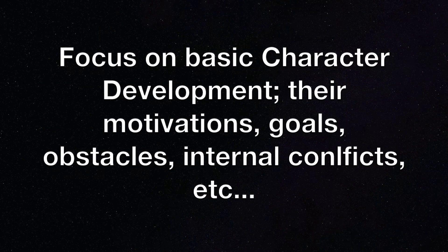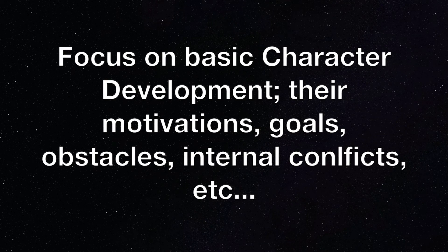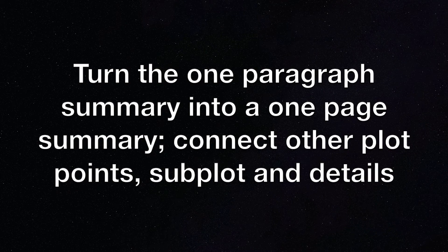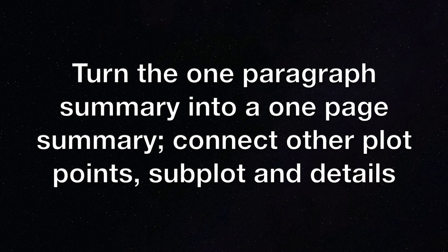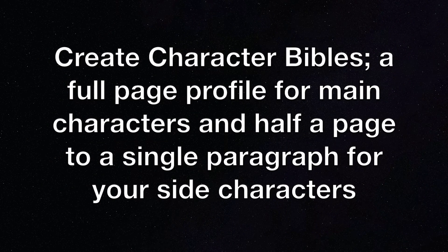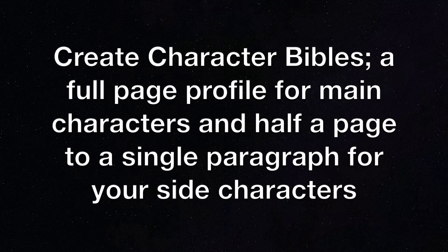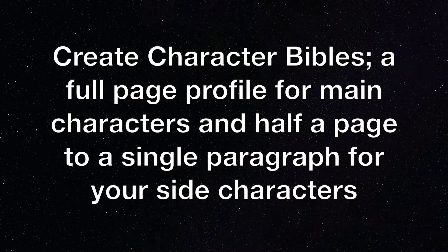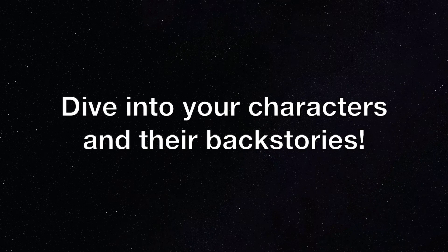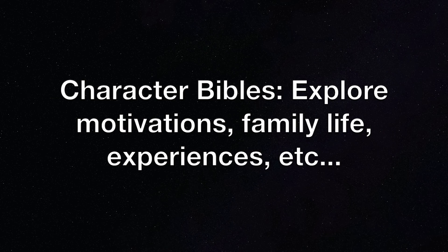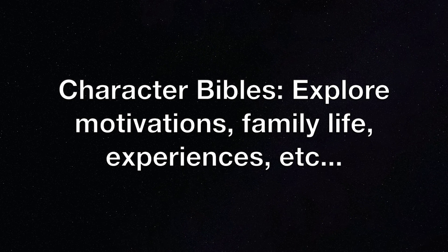Next, focus on basic character development: identify their motivations and goals, the conflict keeping them from reaching that goal, and the result of their character arc. Remember that inner and external conflicts will affect your character. Then turn the one paragraph summary into a one page summary, connecting all the points and filling in some subplot and other details. After that, create character bibles — a one page profile for your main characters and maybe a half page to a paragraph for your side characters depending on their influence. This is where you dive into their backstory, motivation, past, family life, etc. Even giving your side characters this kind of rounded profile makes them feel like more than just a side character.